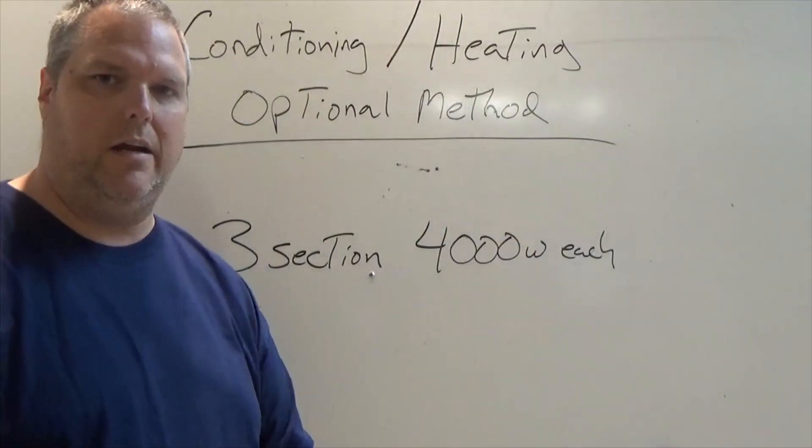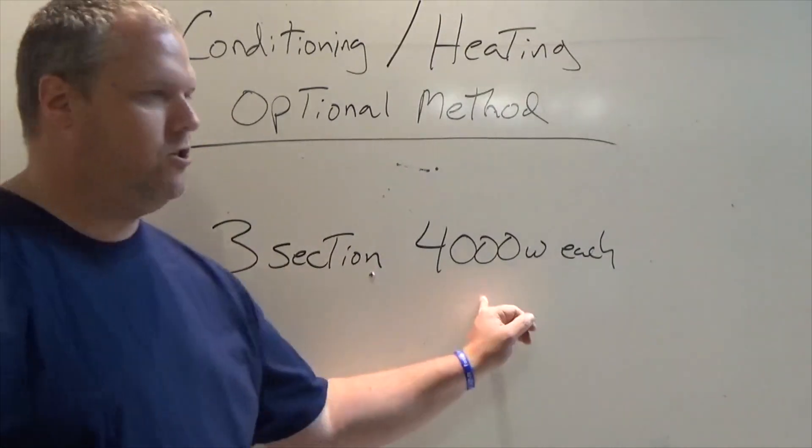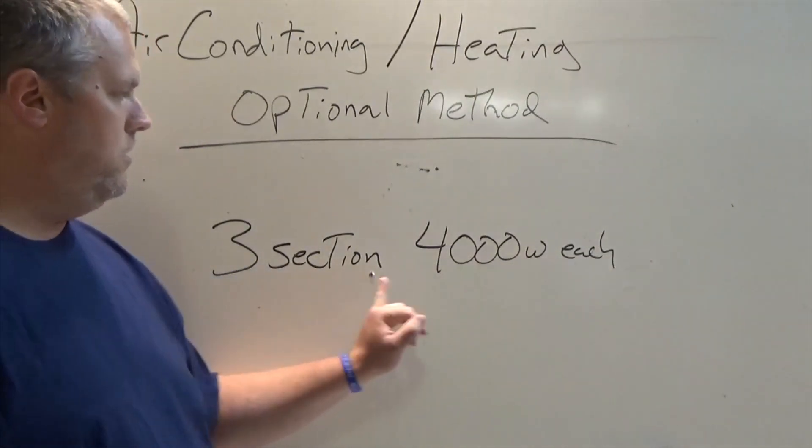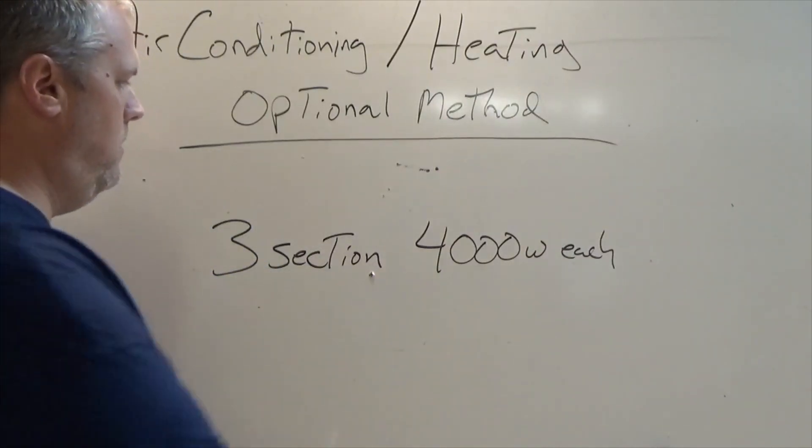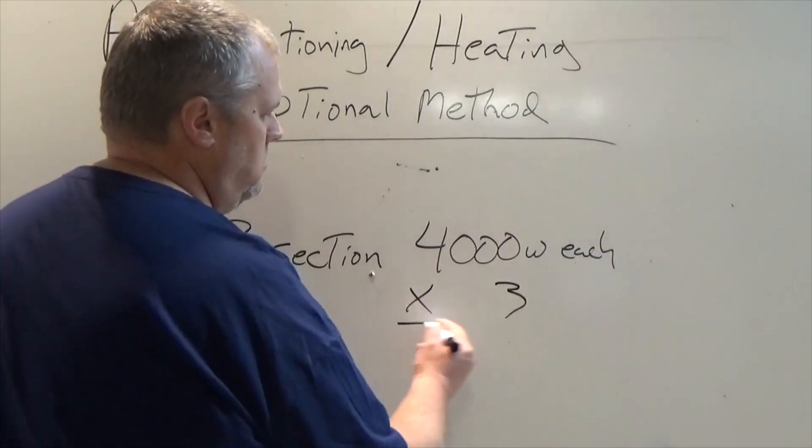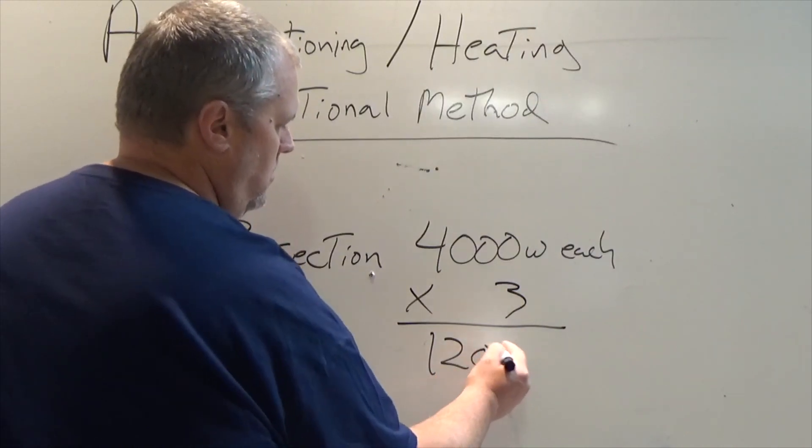So in this dwelling here, I have three sections that are separately controlled and they're 4,000 Watts each. So what do we do? Basic math. Multiply 4,000 by three gives us 12,000.